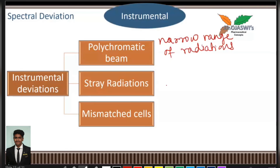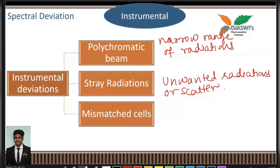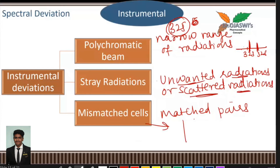The next spectral deviation is stray radiations: any unwanted, undesirable radiations might affect the absorptivity and eventually lead to a change in absorbance, deviating from Beer-Lambert's law. The third is mismatched cells or cuvettes: the cuvette slit width should be less than one-tenth of the natural bandwidth, and the material of the cuvette must be the same brand only. These were the instrument-related spectral deviations.